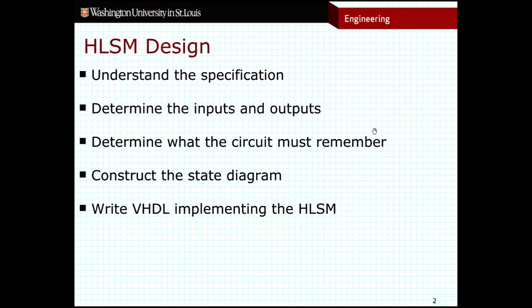Something you can use to help make this distinction is to think about how many possible values the thing you must remember could have. If it has a very small number of values — two, for example, on or off — then that's a good candidate for states. If it's going to store a lot of potential values, tens, dozens, or even hundreds, then that's a great candidate for a variable in a high-level state machine. Otherwise, we would have to create an individual state for each value, which is not feasible. That's the biggest difference in step three: incorporating variables as well as states.